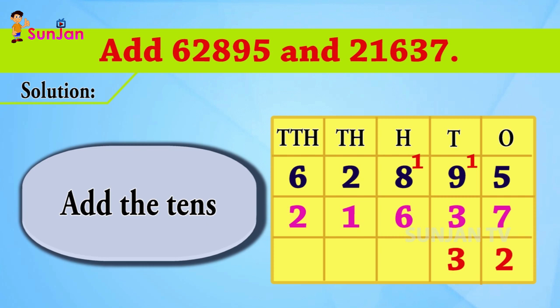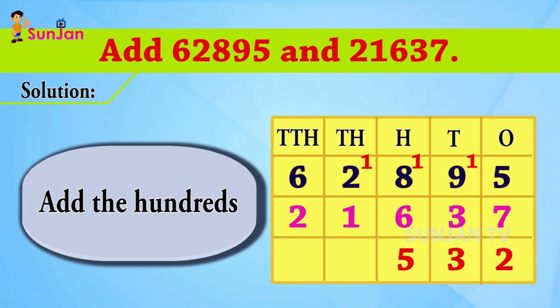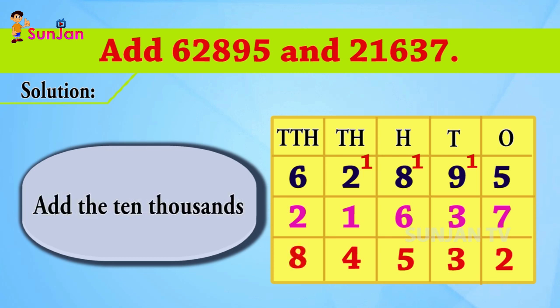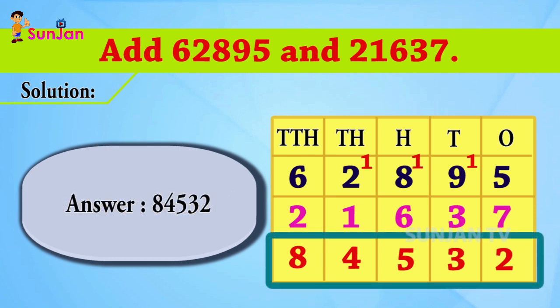8 plus 6 is 14, plus 1 is 15. Write 5 in the bottom and 1 above 2. 2 plus 1 is 3, plus 1 is 4. And 6 plus 2 is 8. The answer is 84,532.